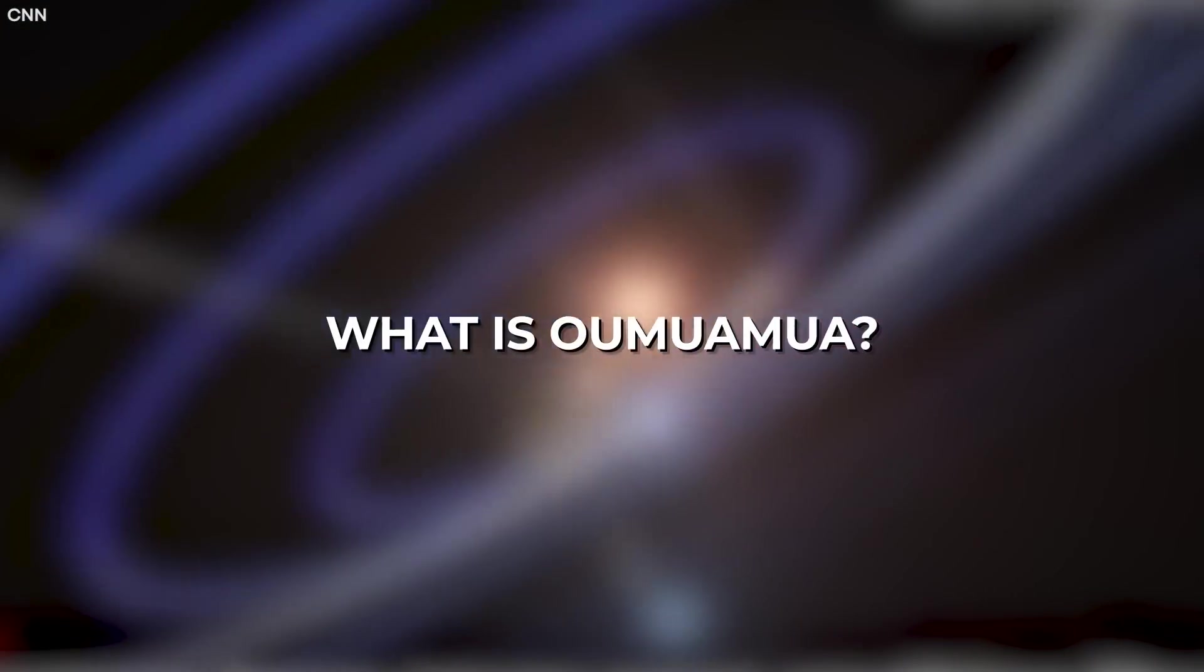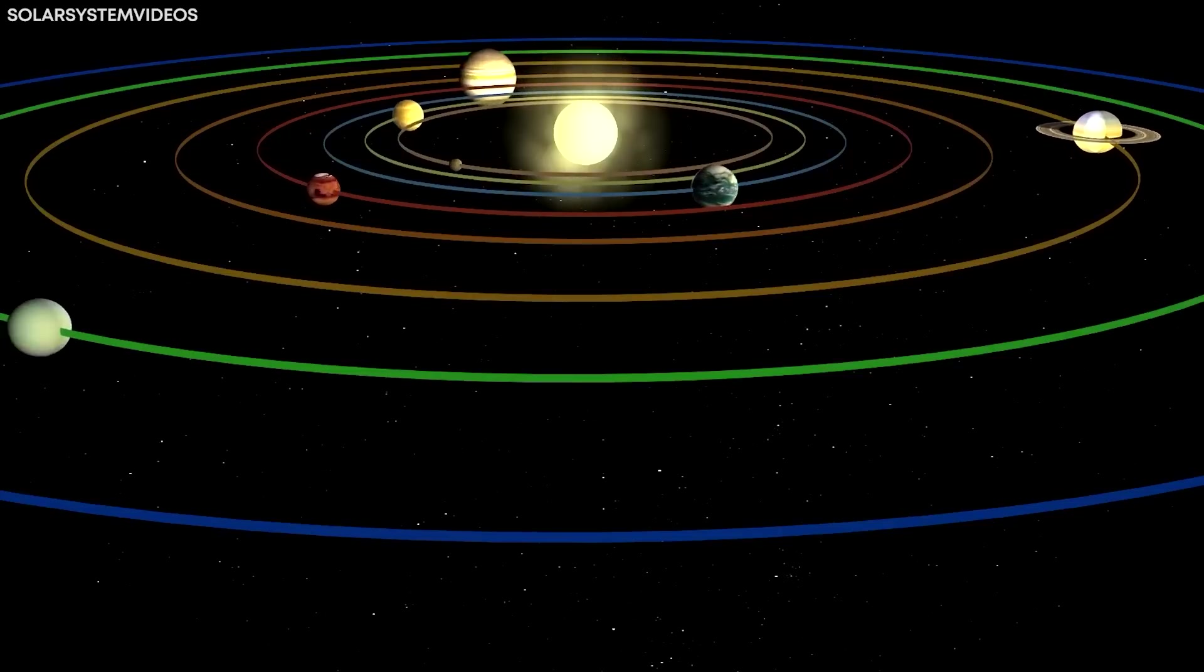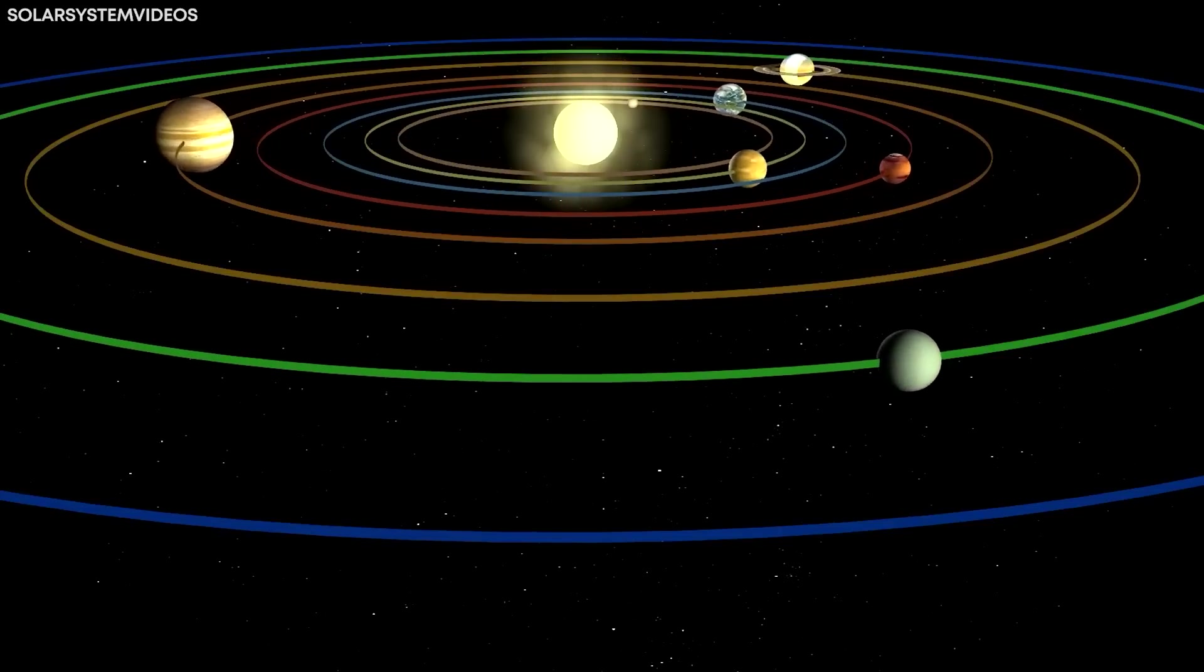But what is Oumuamua? Though no one knew what it was when it first showed up, it soon dawned on scientists what type of objects they were dealing with. It was nothing known to our solar system, but an interstellar object.